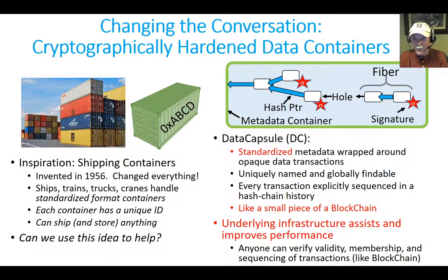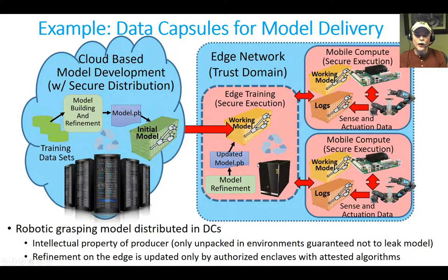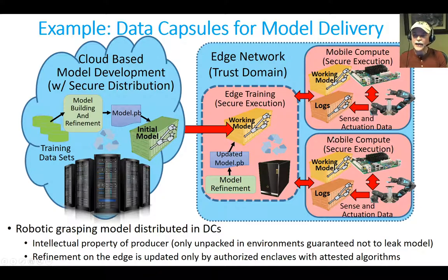The underlying infrastructure makes it possible to move these data capsules around anywhere in the world in a standardized way, assuming that the owner of the data authorizes that. For example, you could imagine a scenario where we have a bunch of training data for how a robot might grasp things. That model gets trained up in the cloud and is put into a data capsule. It's secure because it's encrypted and signed by the producer, then shipped off to the edge where the only place it can be unpacked and utilized is in a secure execution environment where the keys for unpacking it are given. We know it's authentic because we can check the signatures, and any updates can only happen in authorized environments as well.